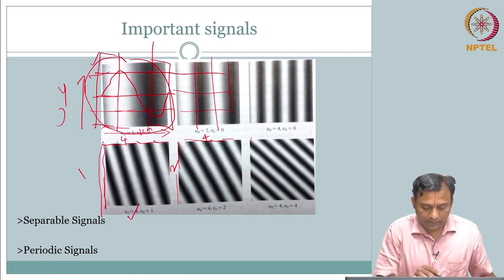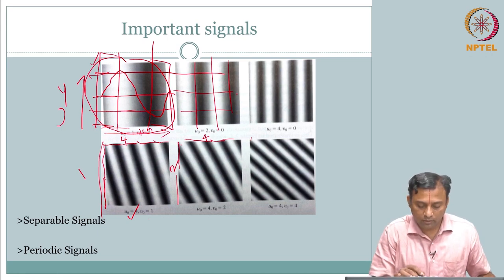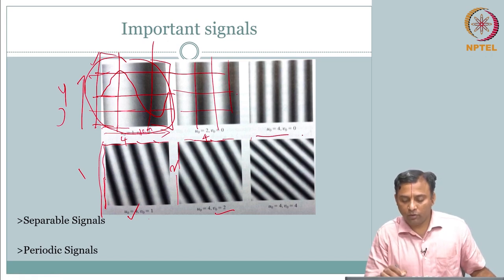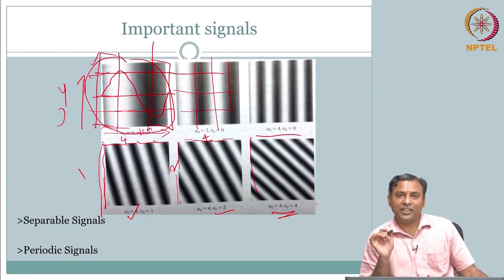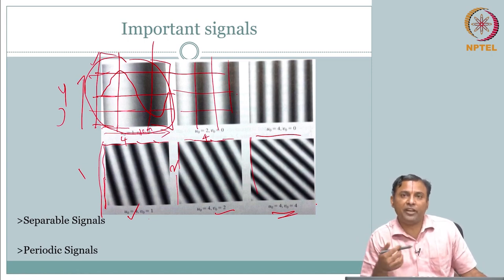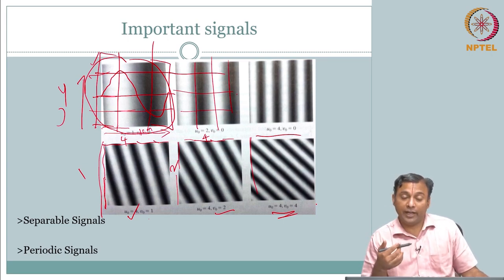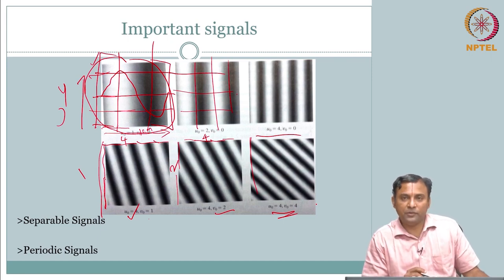So 4 and 1: x direction is 4, y direction is 1. U₀ = 4, v₀ = 1. The next: x direction is 4, v₀ = 2. Then 4 and 4. So much for a simple sinusoidal oscillation — now you can start to see, when you look at an image and talk about spatial frequency, how to eyeball it and estimate what kind of frequencies are present.